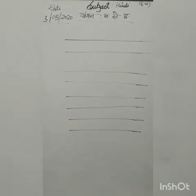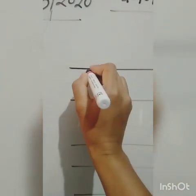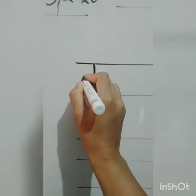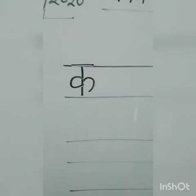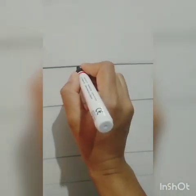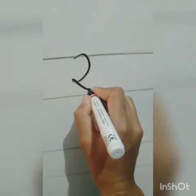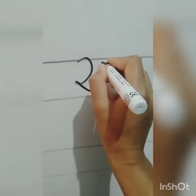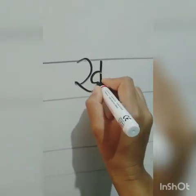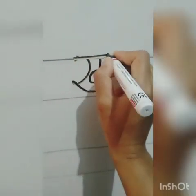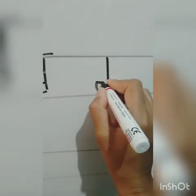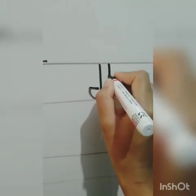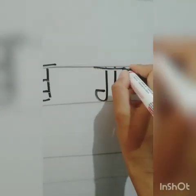Then you have to start from the first line. I am going to tell you how you will write. First, write Ka — Kabuta: standing line, curve, sleeping line. Then Kha — Khar Ghosh: make like a 2, standing line, C and a sleeping line. Then Ga — Gamla: standing line, make a curve, standing line, then a sleeping line.